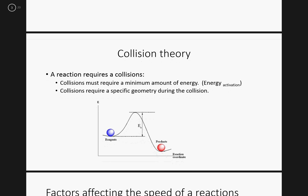We have collision theory. A couple things you might want to understand is that there are two things required for a chemical reaction to occur. One, you have to have one particle physically colliding with another particle. So a collision is required.